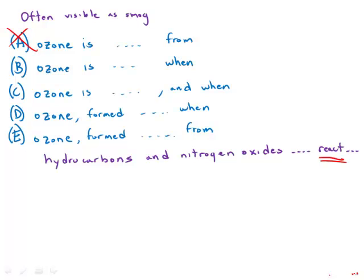B has the same independent clause: ozone is formed in the atmosphere. When—so instead of a preposition, it creates a subordinate conjunction. And of course a subordinate conjunction is followed by a noun and a verb.